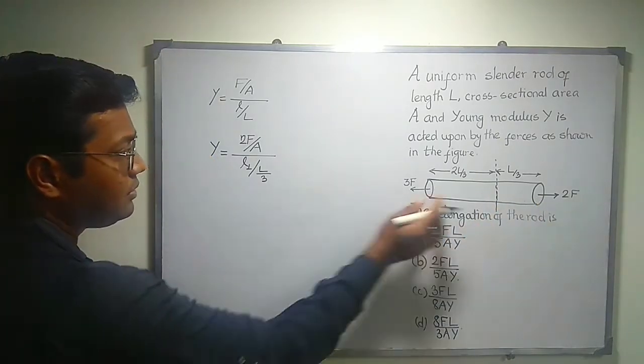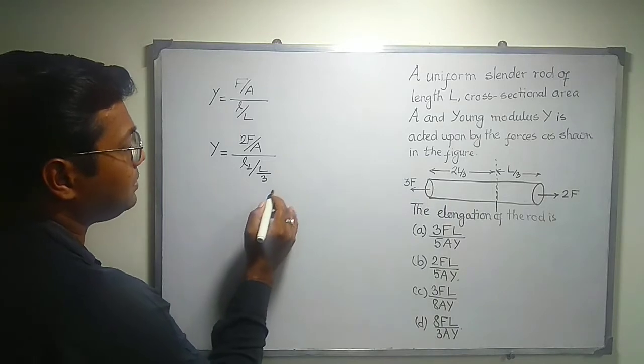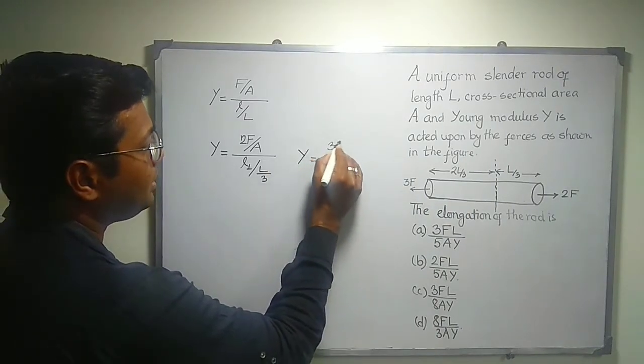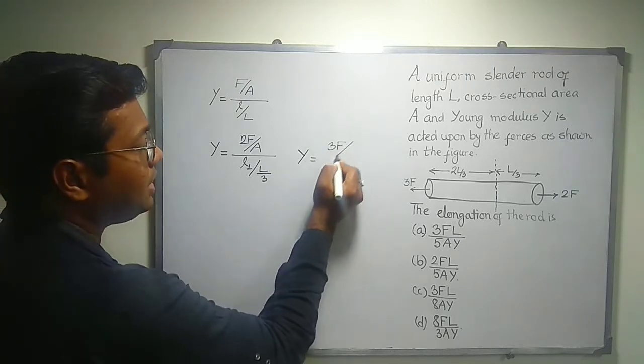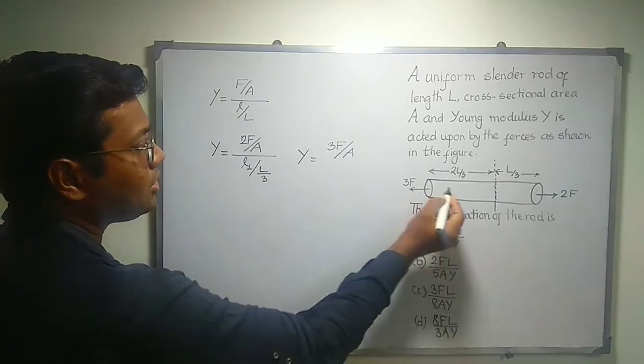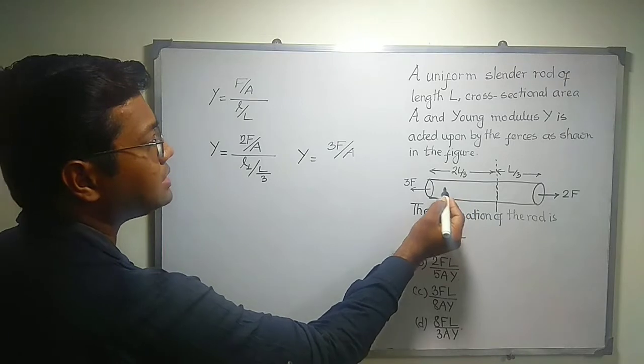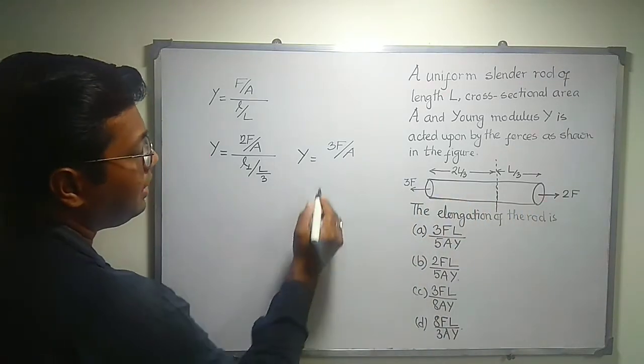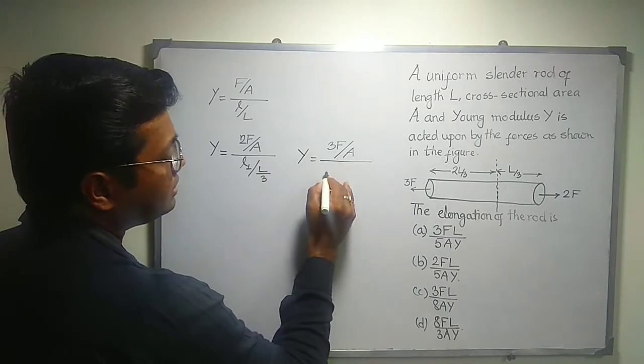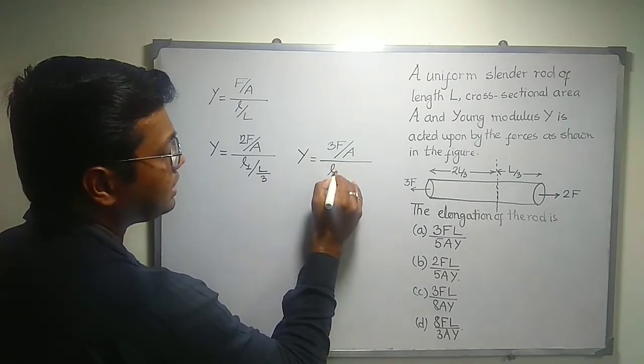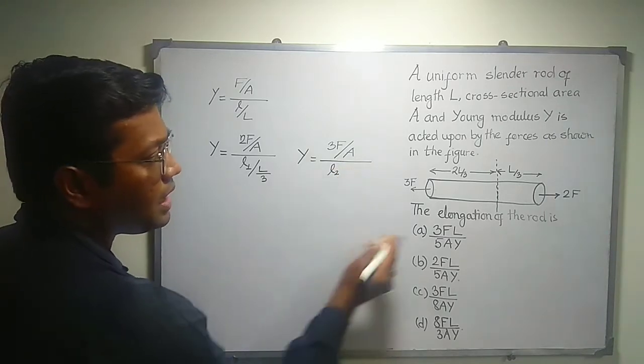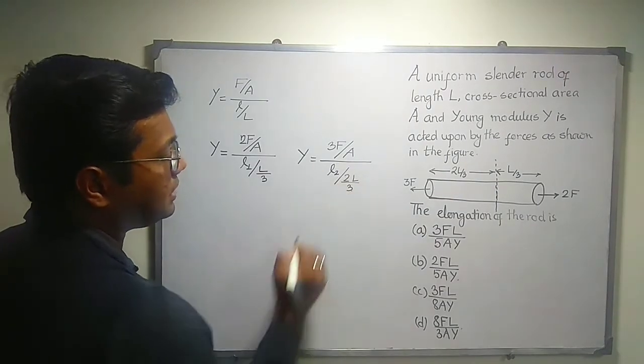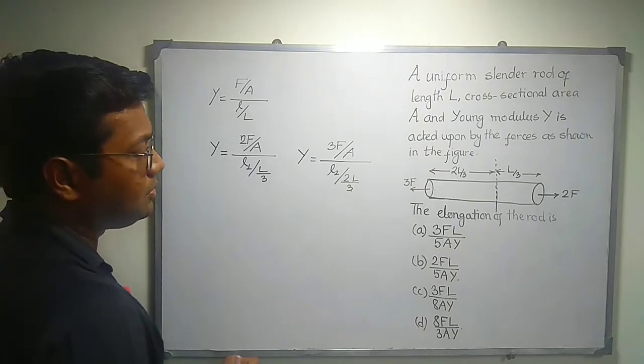And for this section, if I want to determine, then Y is equal to 3F divided by A. Cross sectional area remains unchanged, and this is observed from the figure. It remains same. The elongated length, the elongation due to it, we can say it is L2. And the total length is actually 2L divided by 3.